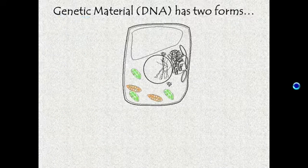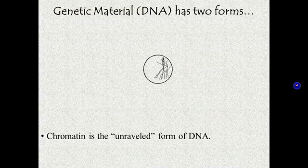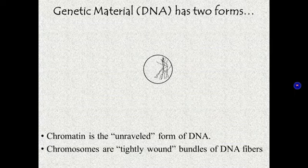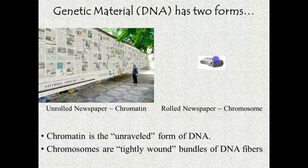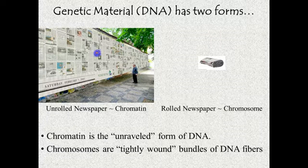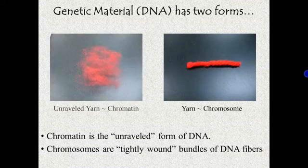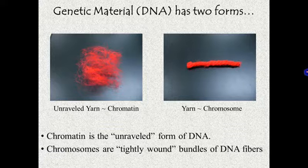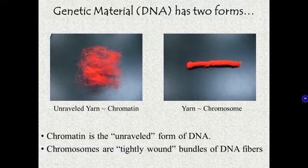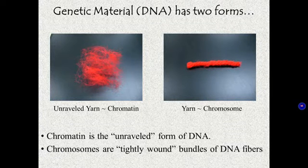Just a little reminder that DNA actually has two forms in the cell. This is a slide from last semester. Chromatin is the unraveled form of DNA, and chromosomes are the tightly wound bundles of DNA fibers. An analogy of this is, when we have a rolled up newspaper, that's a chromosome. When we completely unroll, or unravel the newspaper, that is chromatin. Another analogy is to look at a piece of yarn, right? And yarn, a piece of yarn, is like a chromosome. And then, when we tease apart those, all of the individual fibers that make up the yarn, as you probably know, that yarn is made of very teeny, teeny, tiny little fibers, which is kind of like the chromatin.